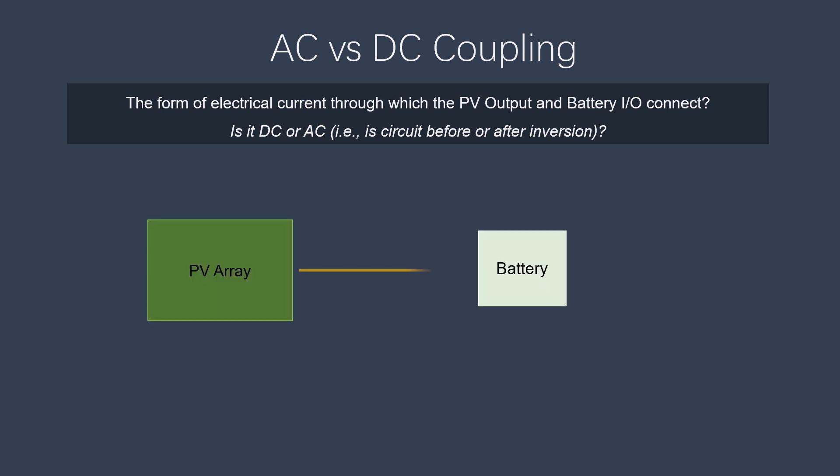For example, this PV array is outputting DC power. If it goes to a battery, perhaps through a solar charger, there is no conversion to AC, and this is an example of DC coupling.